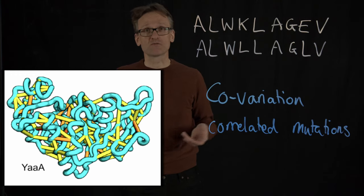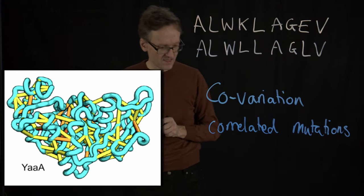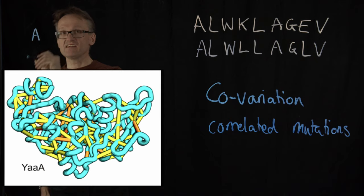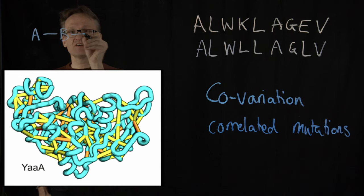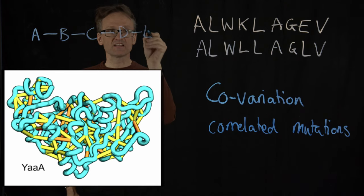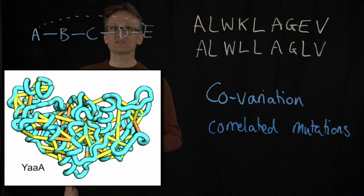Why didn't anybody come up with that before? Well, there is a problem here. Assuming that residue A here, now it's not an amino acid, it's just a site, if that one correlates with B, and then B correlates with C, and C correlates with D, and D correlates with E, this will also mean that A correlates with E.